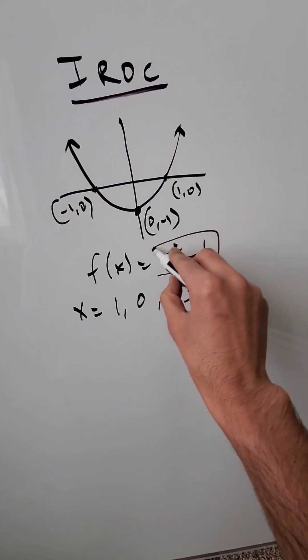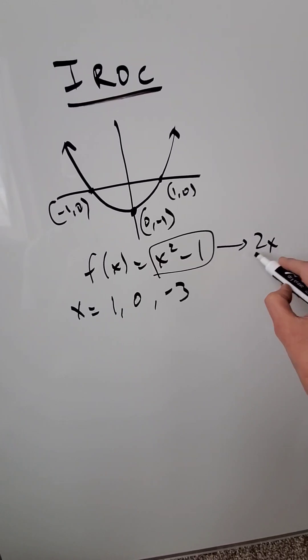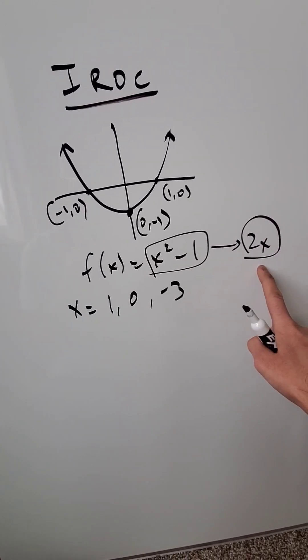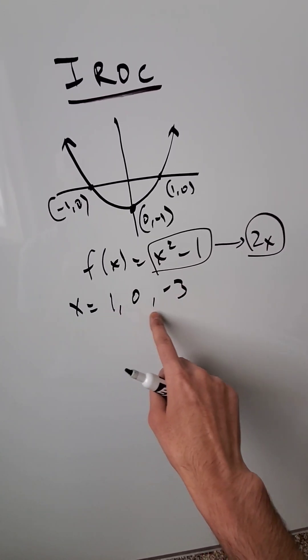I need to do the derivative of this. When I do the derivative of this, I'm getting a derivative factor 2x. This is what will give me my instantaneous rate of change at these particular points.